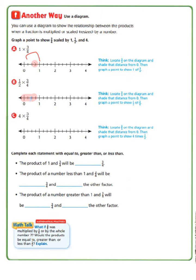Our last one is 4 times 3 fourths. We go to our 3 fourths mark and shade that distance back. Then we make jumps on the number line, each jump being 3 fourths. Jump 1 lands at 3 fourths, jump 2 at 6 fourths, jump 3 at 9 fourths, and jump 4 puts us on 3. That shows 3 fourths multiplied 4 times, making 4 jumps of 3 fourths each.